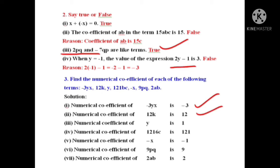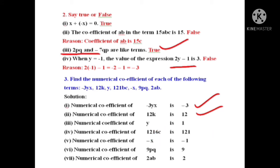The coefficient of y is 1 — that is, 1 into y. So the coefficient is 1. For the term minus x, the coefficient is minus 1. For 9PQ the coefficient is 9. For 2AB the coefficient is 2. These are all quite straightforward.